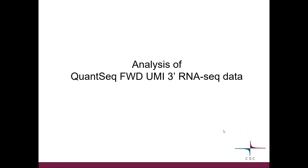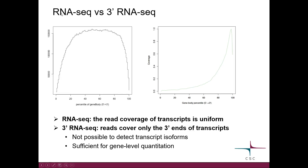This video is an introduction to the analysis of QuantSeq Forward UMI 3' RNA-seq data. The difference from normal RNA-seq data is that in 3' RNA-seq, the reads cover only the 3' end of the transcript, whereas in normal RNA-seq there is uniform coverage over the transcript length. With 3' data, it is not possible to detect transcript isoforms, but it is sufficient for gene-level quantitation and therefore differential expression analysis.